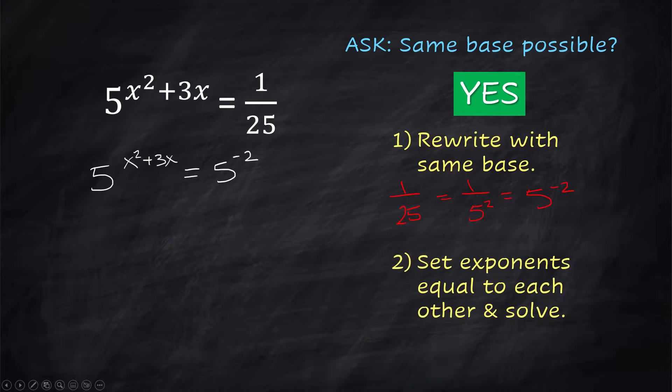Then you set the exponents equal to each other and solve. x² + 3x = -2. All of a sudden, this is no longer a difficult problem. We're back into just doing some algebra. I'm going to add 2 to both sides. x² + 3x + 2 = 0. Pretty simple factor problem.